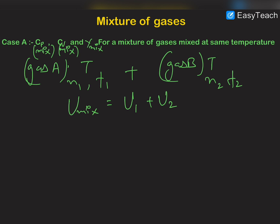Therefore, U mixture can be written as (N1 + N2) Cv mixture into T, where N1 + N2 is the number of moles of the mixture, and we know that U = N Cv T. No heat exchange occurs because temperature is the same, so the temperature of the mixture will also remain the same.